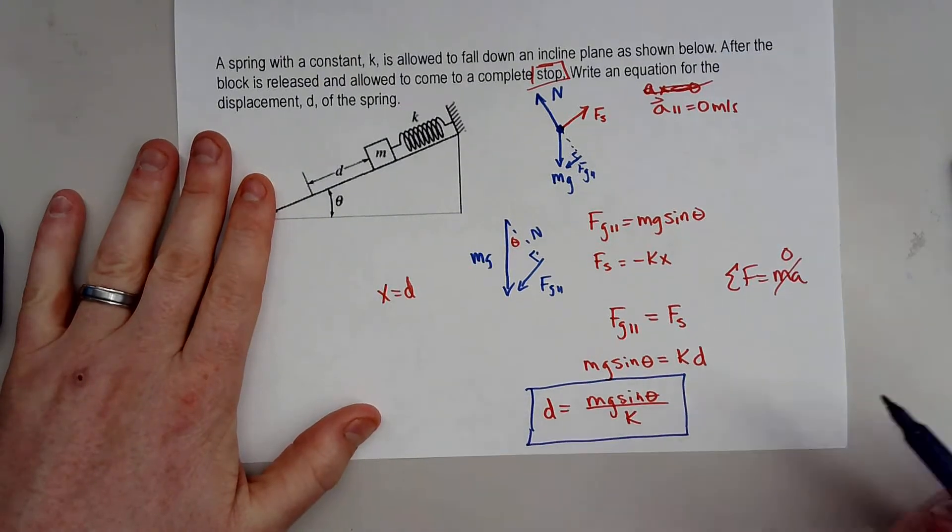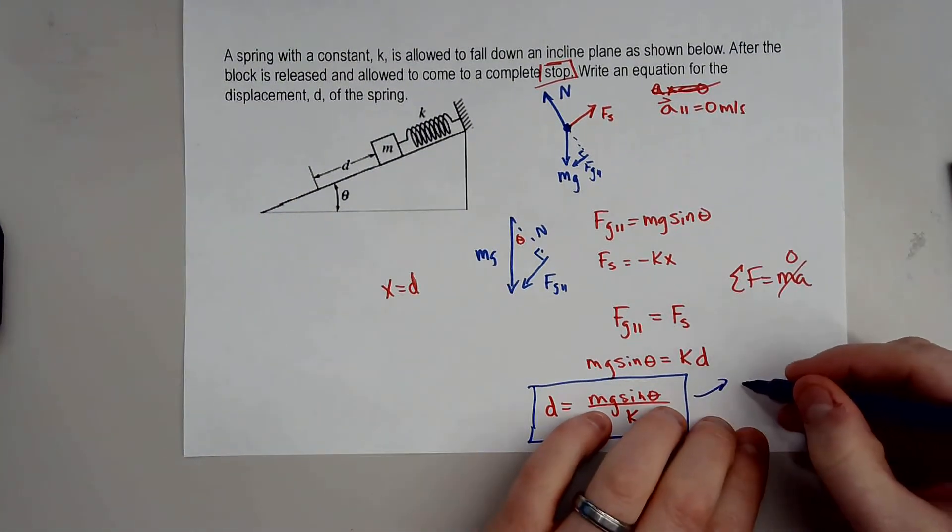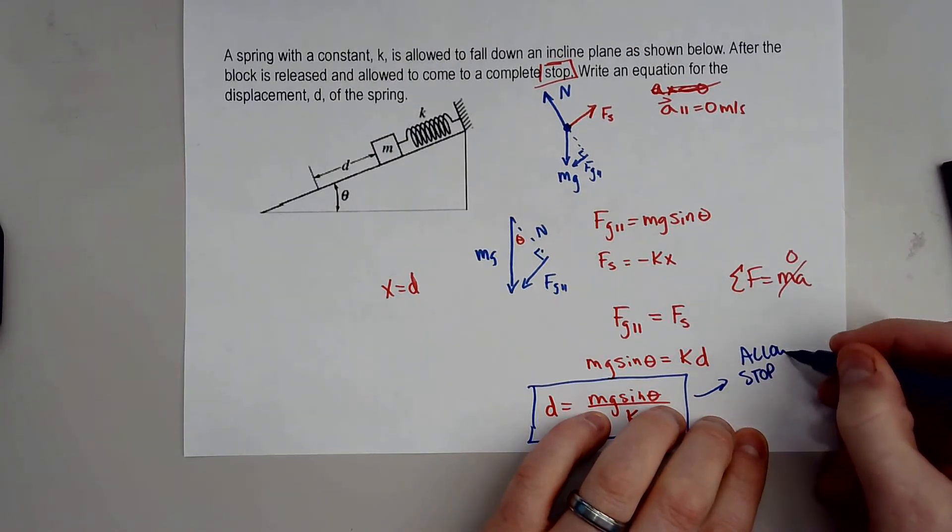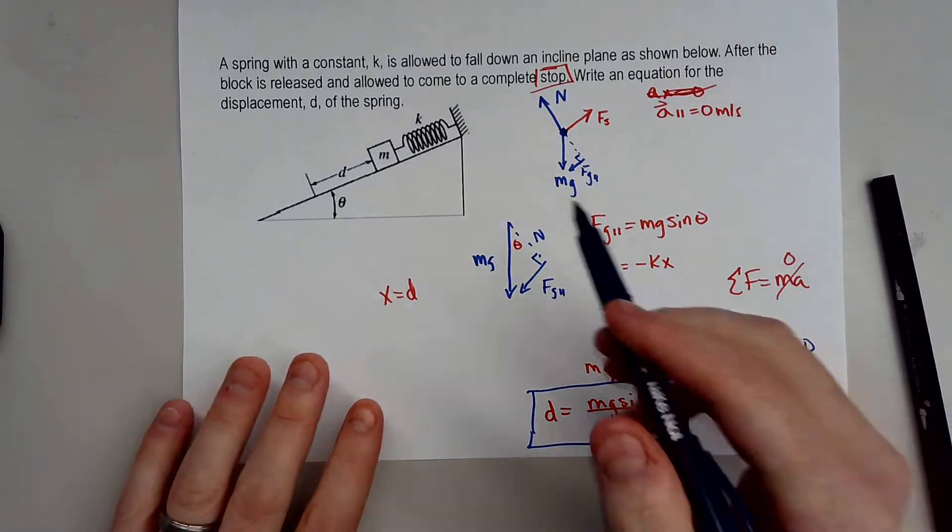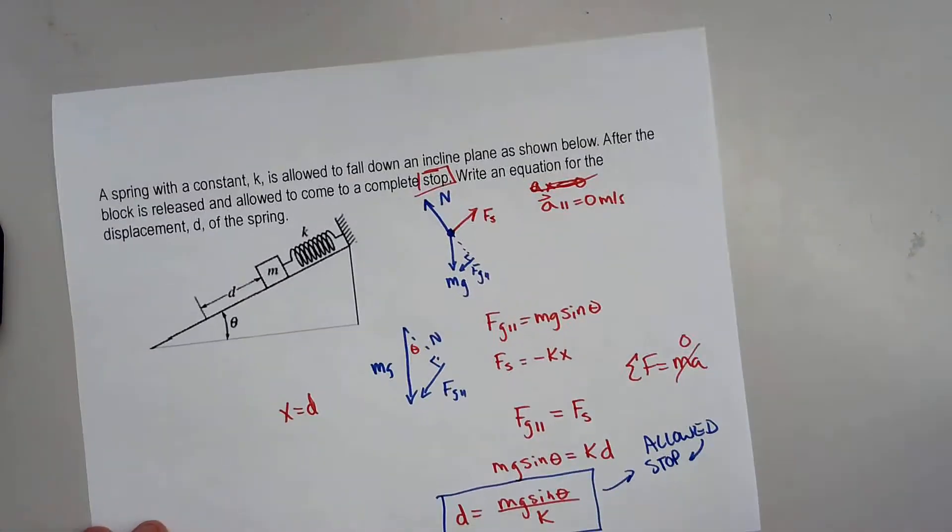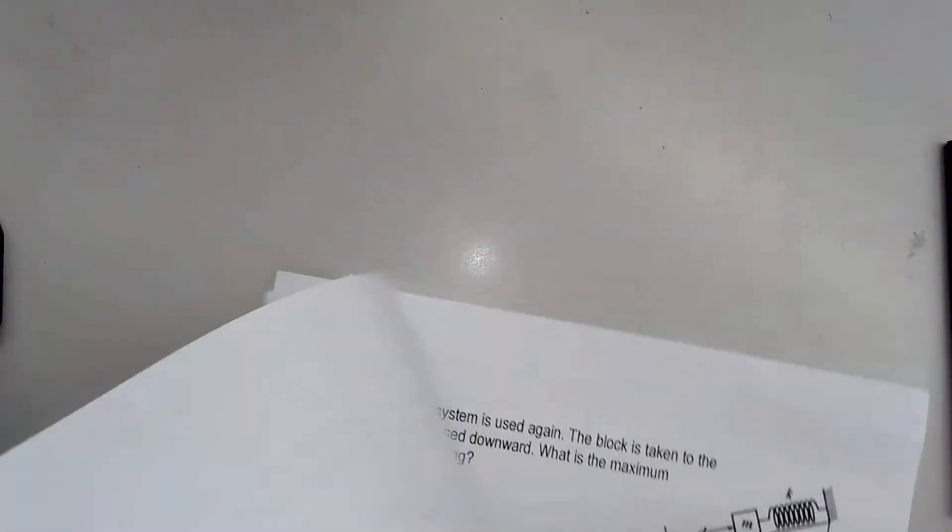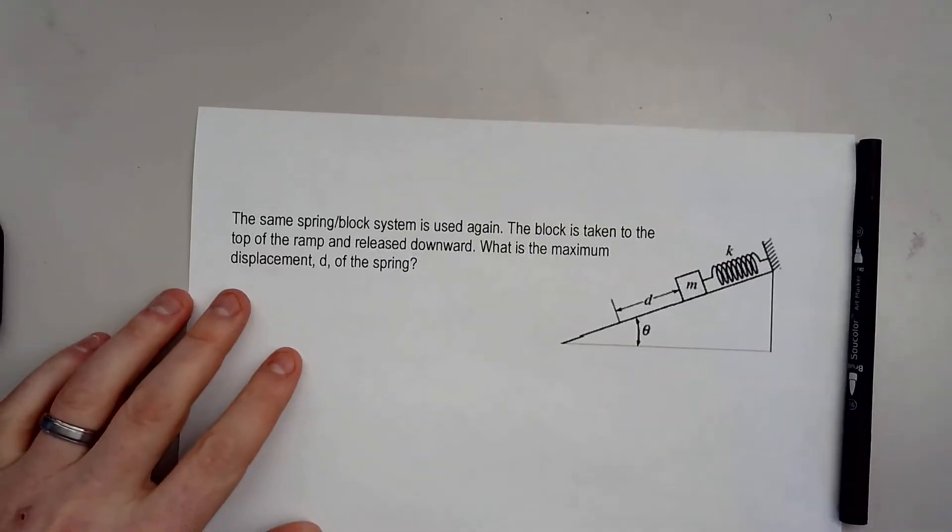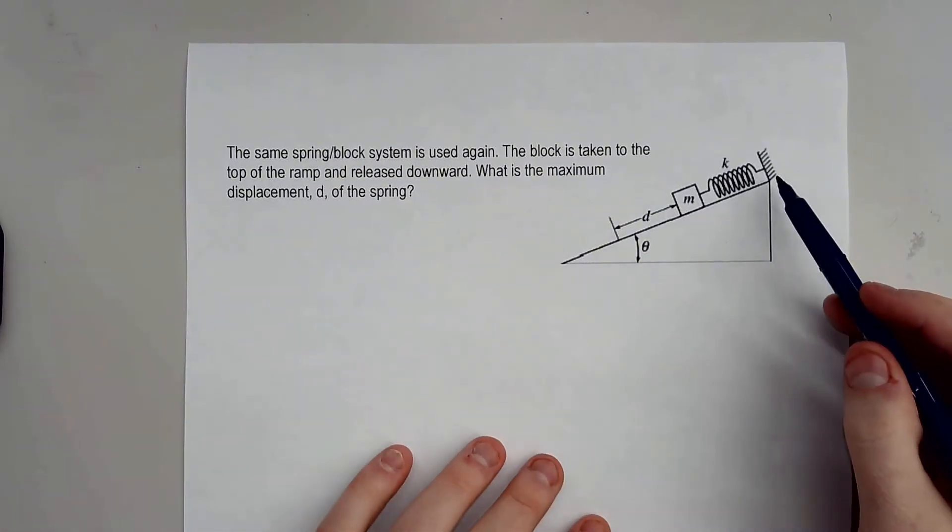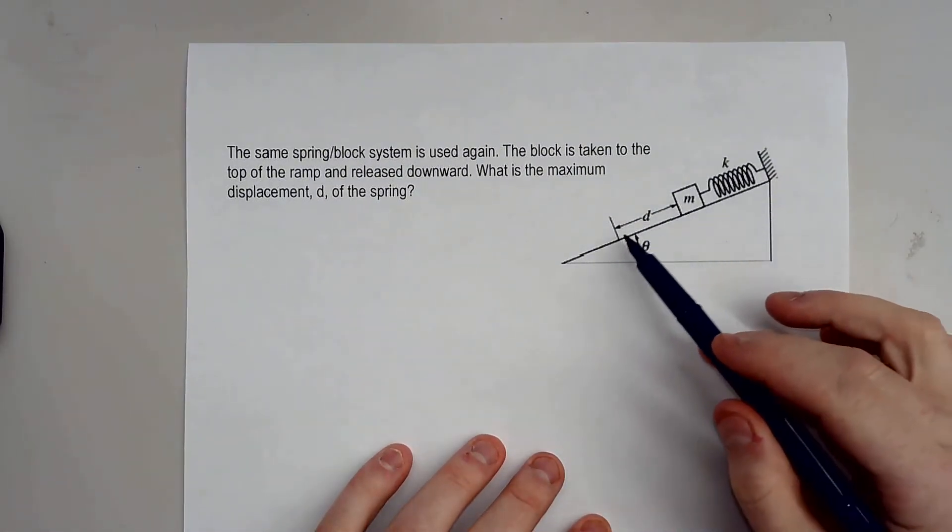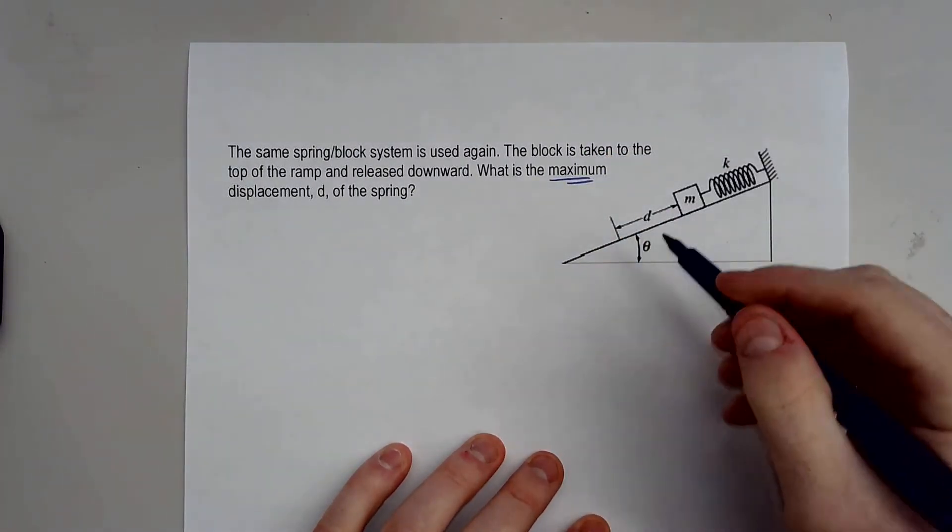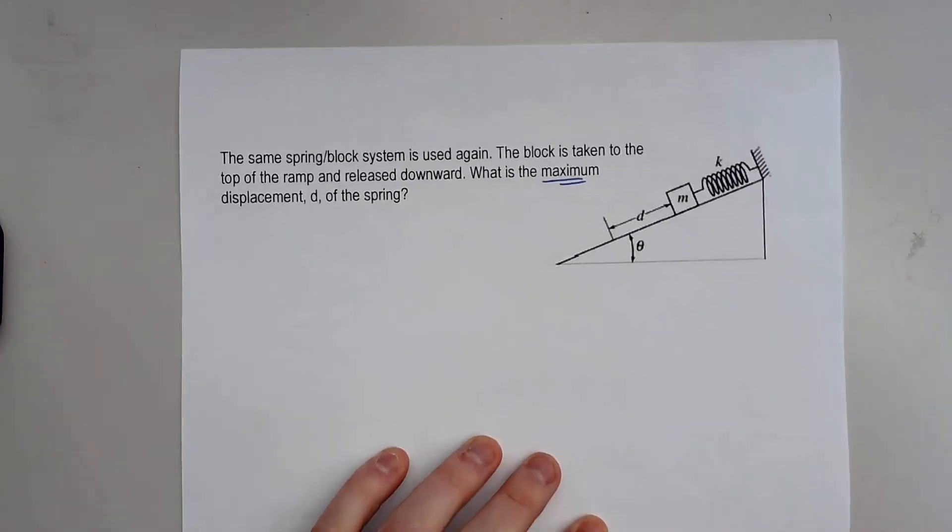That's if it's allowed to come to a complete stop. So if it's allowed to come to a stop, this is obvious, this is the spring was allowed to fall down and just stop. Now the other question is what happens if the spring is not allowed to stop? So now you have a situation where the spring and the block system is taken to the top of this ramp and it's allowed to fall down the ramp. So the question is what is this maximum displacement? So how far does it really stretch itself?